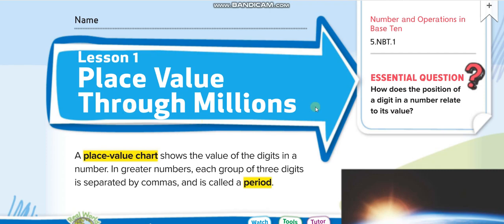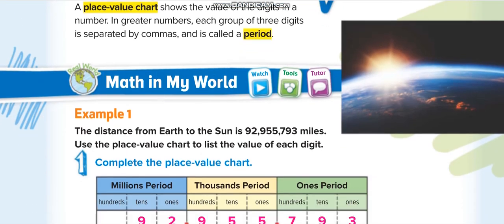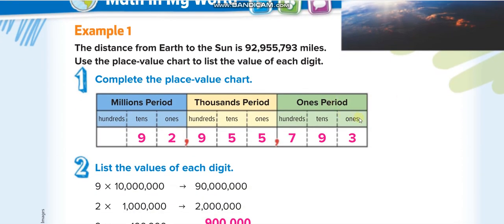In Grade 4 you took place values up to thousands, so here in Grade 5 we will go up to millions. The place values are: ones, tens, hundreds, then one thousand, ten thousand, hundred thousand, then one million, ten million, and hundred million.